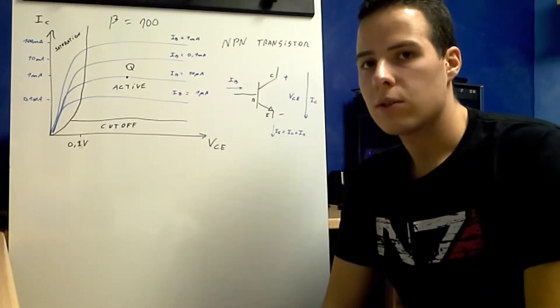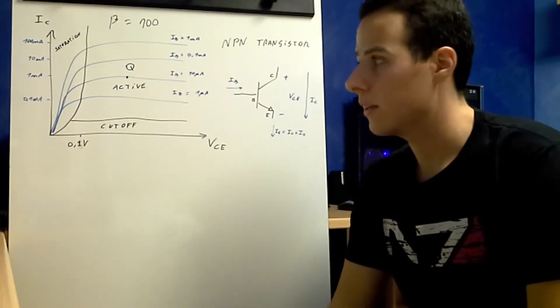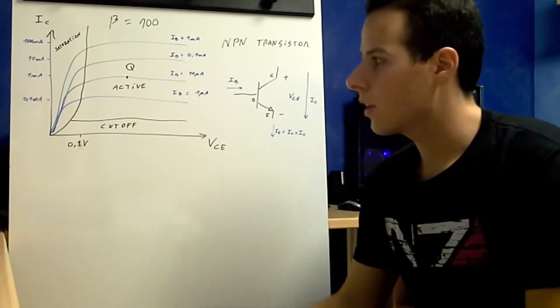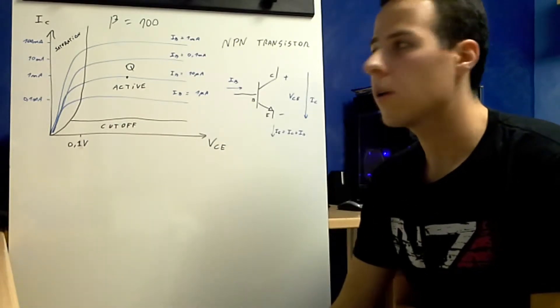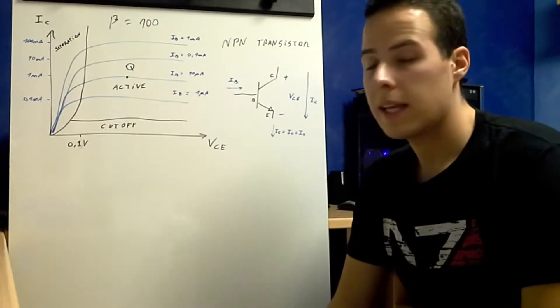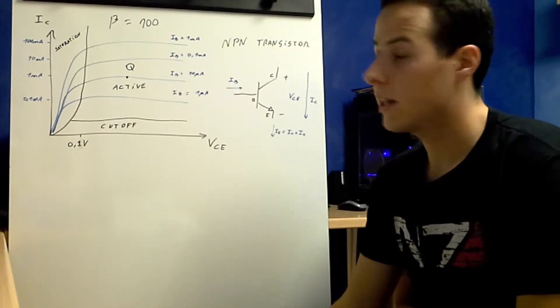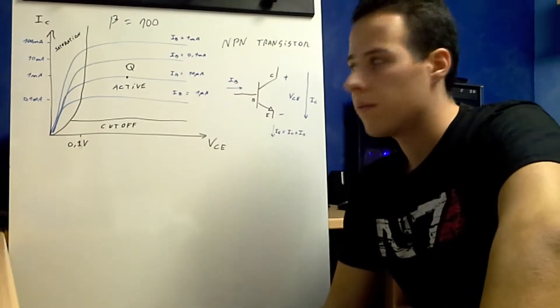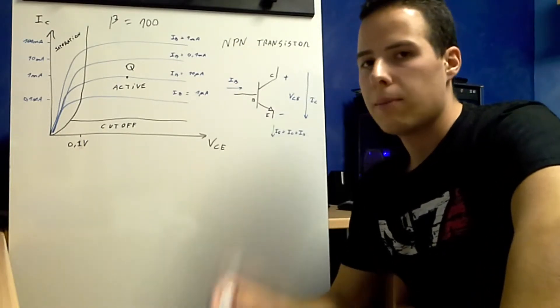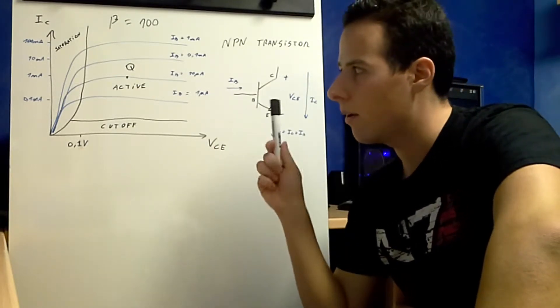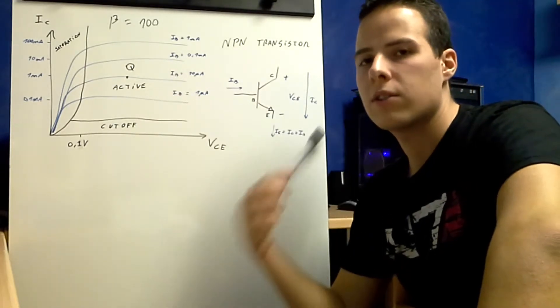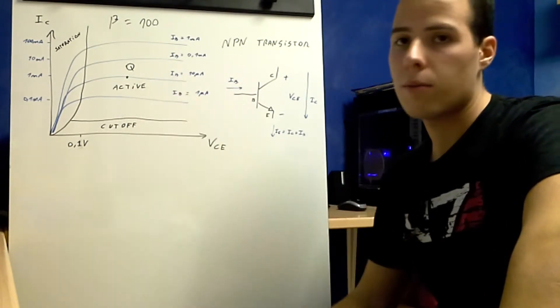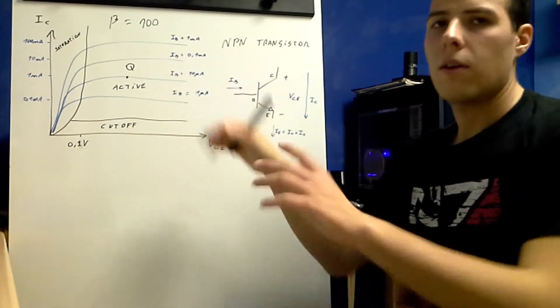So, biasing your transistor is to select in which way your transistor is going to behave. You can bias your transistor for working in the cutoff region or for working in saturation or in active region. Normally you bias your transistor for working in the active region because it is the region where it behaves like a current amplifier. And maybe it is the most useful zone of operation. And the best point for making your transistor a good amplifier is in the middle of the active region. So, here is the Q point, the quiescent point, the work point. And it is in the middle of the active region.